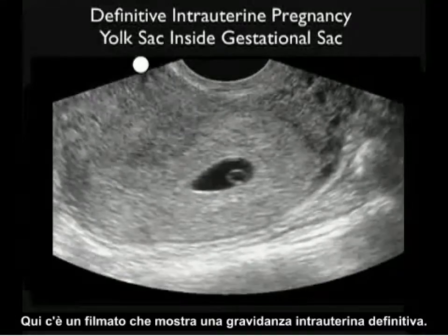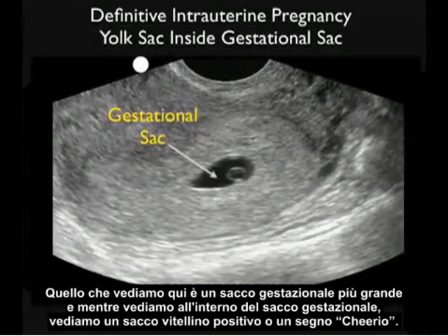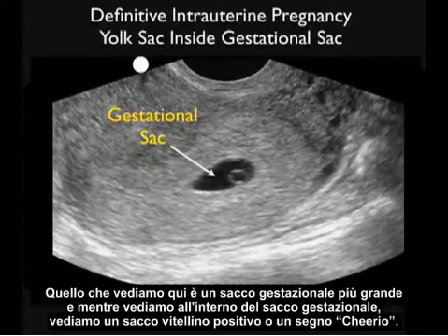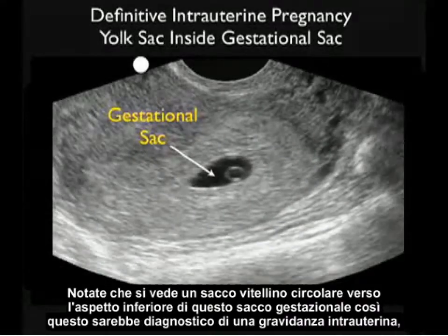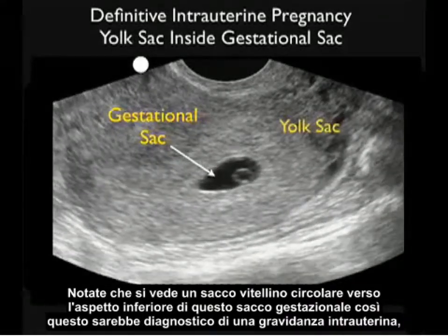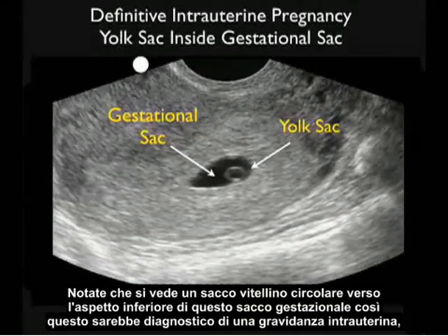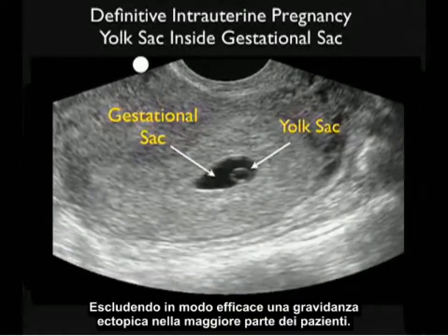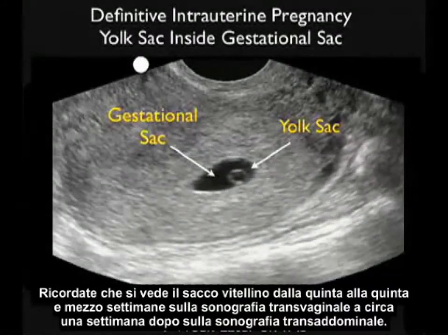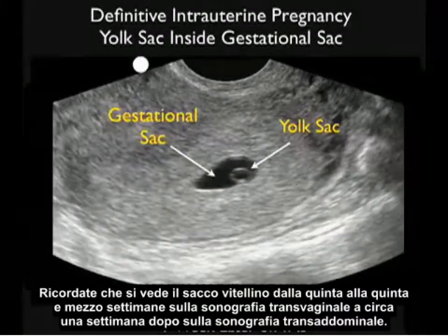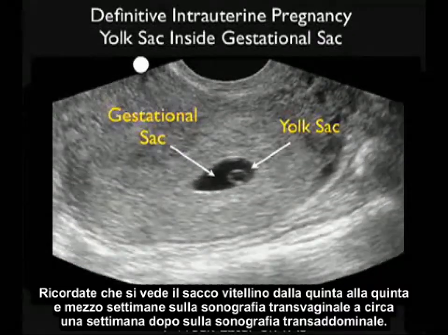Here's a video clip showing a definitive intrauterine pregnancy. We see a larger gestational sac, and inside we can see the positive yolk sac or cheerio sign towards the inferior aspect of the gestational sac. This would be diagnostic of an intrauterine pregnancy, effectively ruling out ectopic pregnancy in the vast majority of patients. The yolk sac is seen at about 5 to 5.5 weeks on transvaginal sonography and about a week later on transabdominal sonography.